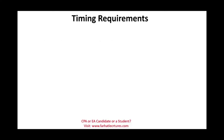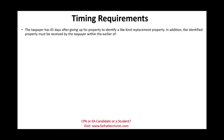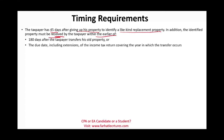One more topic: Section 1031 time requirements. Does the transaction have to happen simultaneously? Not at all. The taxpayer has 45 days after giving up the property to identify a like-kind replacement. Then the identified property must be received within the earlier of 180 days after the taxpayer transferred the old property, or the due date (including extensions) of the income tax return covering the year the transfer occurred.